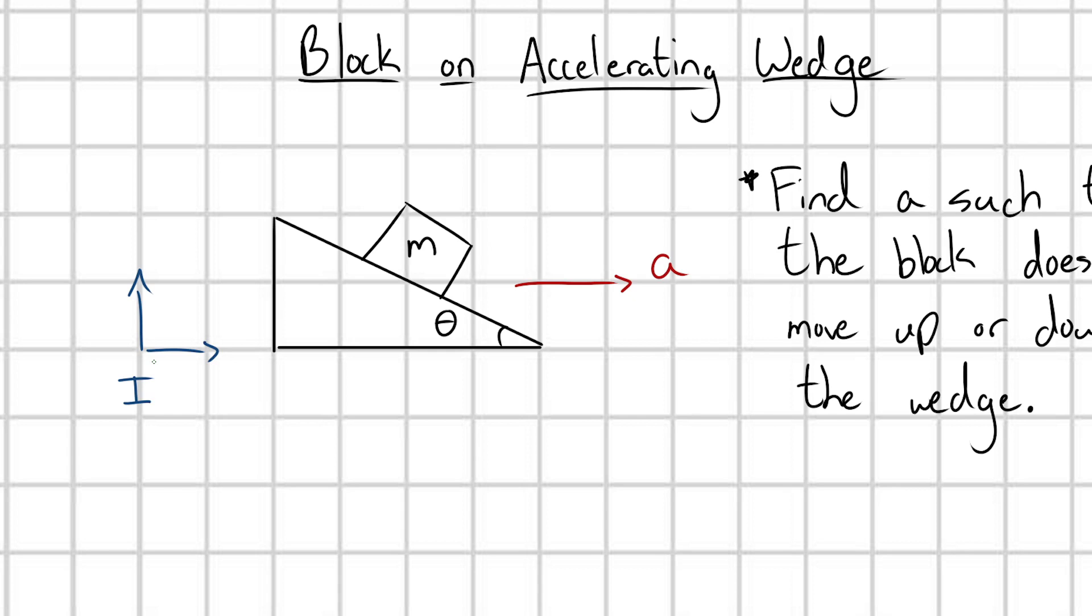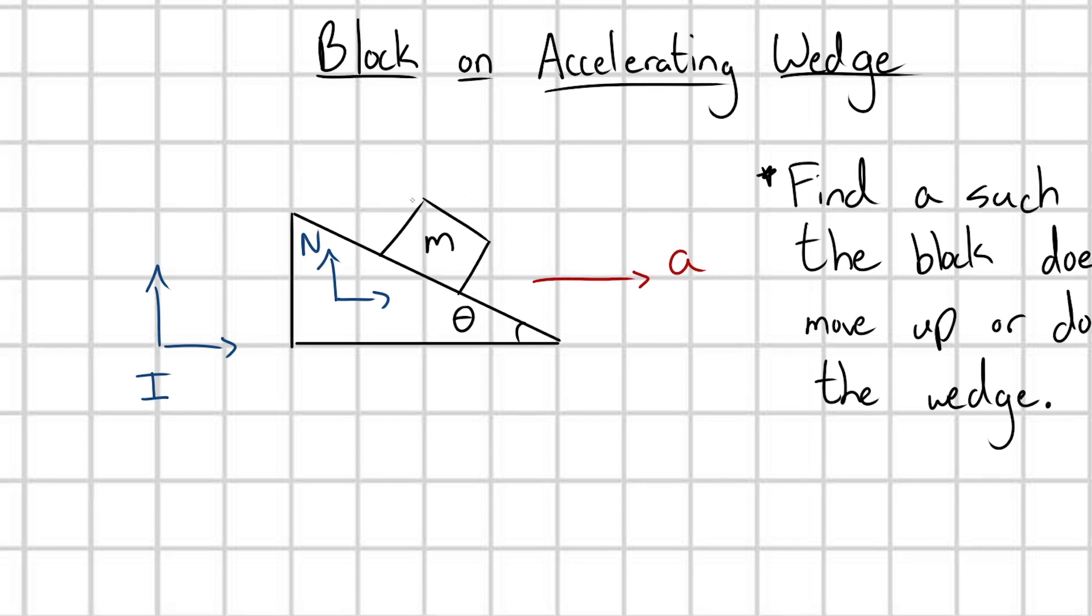And then by establishing this first inertial frame, you can then say, or I go into this non-inertial frame N, which is stuck accelerating with the wedge. And so in frame N, unlike I, we're going to have to modify Newton's second law.